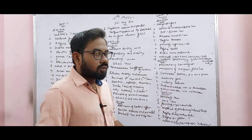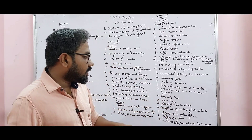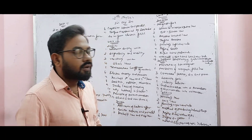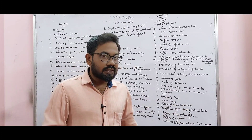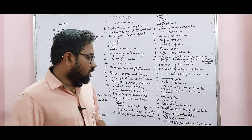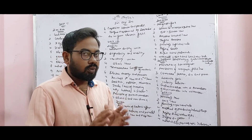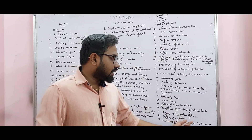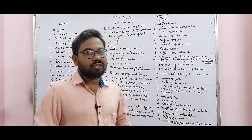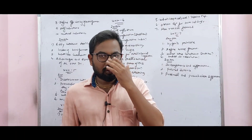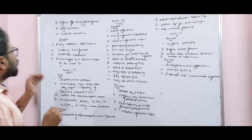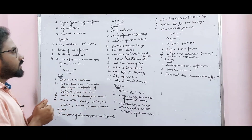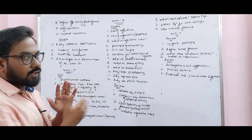Unit 4: Faraday's law, Lenz's law, Fleming's Right-Hand Rule, methods of producing induced EMF. Define RMS value of AC — very important. Define quality factor or Q factor. What is electromagnetic induction? Unit 4, 2 mark: Define efficiency of transformers, self-inductance of coil and mutual inductance of coil.